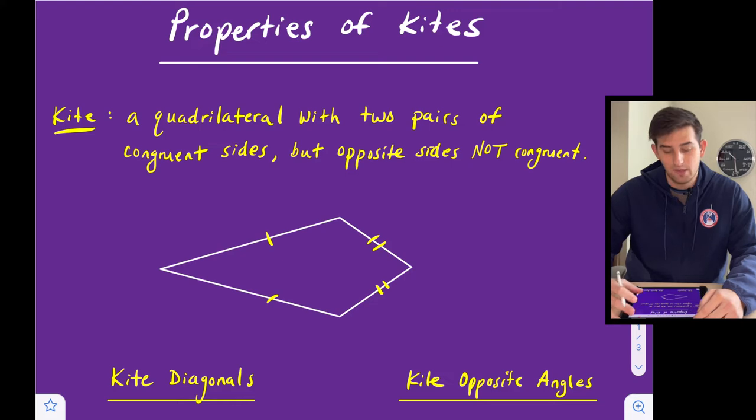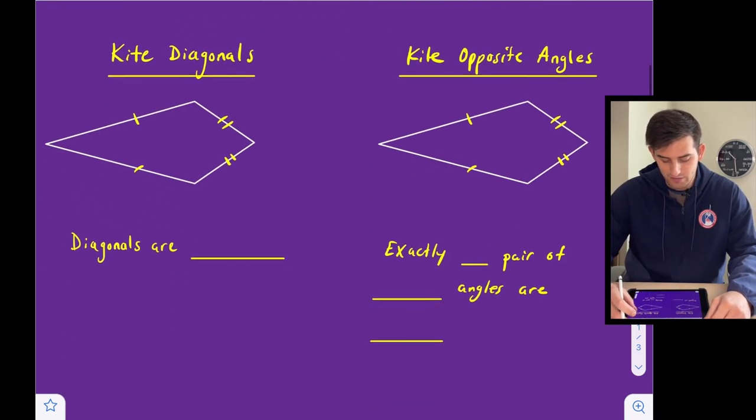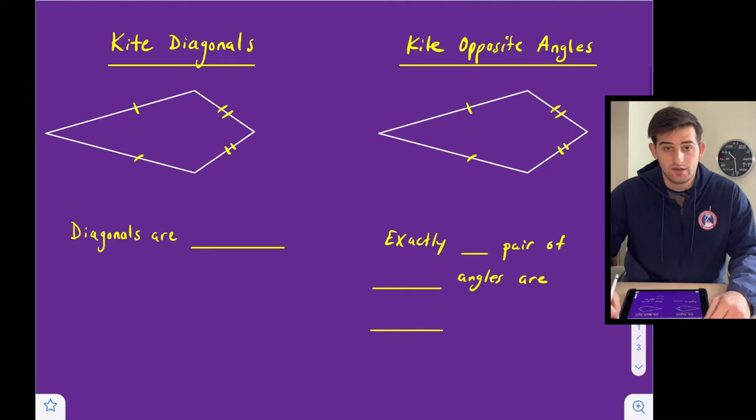So there are a couple properties associated with a kite. The first one has to do with diagonals and the second one has to do with opposite angles. I've got a little statement down here at the bottom. We're going to fill in the blanks together.